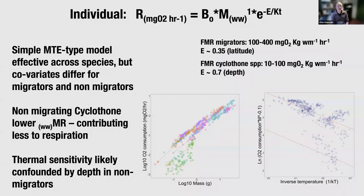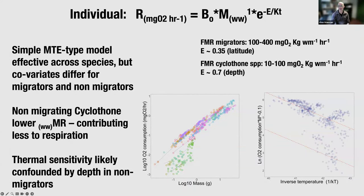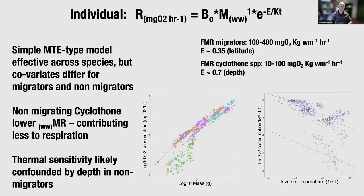To summarize: our otolith data tells us we can estimate metabolic rates in mesopelagic fishes using metabolic theory type equations, but we need to apply different terms for migrating and non-migrating taxa. We have some initial estimates of how to parameterize these groups. The thermal sensitivity for non-migrators appears confounded by depth, and the non-migrators have a rather reduced contribution to carbon flux compared to the migrators.